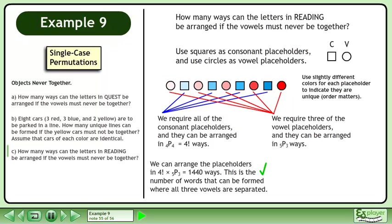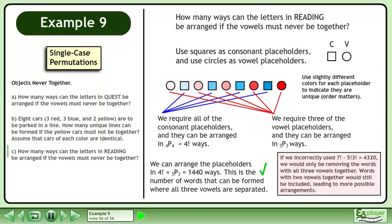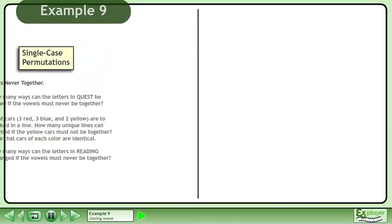This is the number of words that can be formed where all three vowels are separated. If we incorrectly used 7 factorial minus 5 factorial times 3 factorial equals 4320, we would only be removing the words with all three vowels together. Words with two vowels together would still be included, leading to more possible arrangements — so the placeholder method is necessary when separating three or more items.